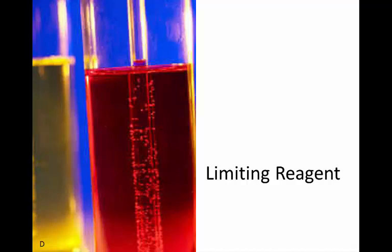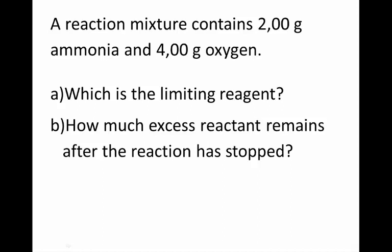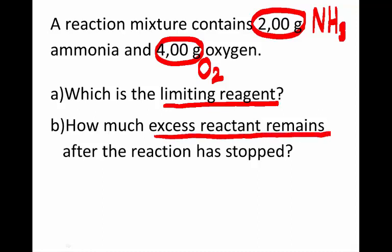Let's answer a question about limiting reagent for the reaction of ammonia with oxygen to produce nitrogen oxide and water. A reaction mixture contains 2 grams of ammonia (NH3) and 4 grams of oxygen (O2). We have to find out what is the limiting reagent — either ammonia or oxygen — and how much excess reactant remains after the reaction has stopped.